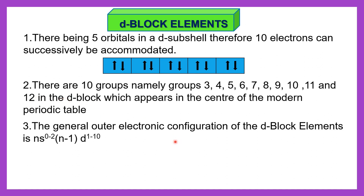The general outer electronic configuration of D block is ns0 to 2, meaning the s subshell has 0, 1, or 2 electrons, and (n-1)d1 to 10. The shell for d is n-1 — for example, if n=4 then d is in shell 3; if n=5 then d is in shell 4. Why 1 to 10? Because the capacity of the d subshell is 10 electrons — 5 orbitals each holding 2 electrons.